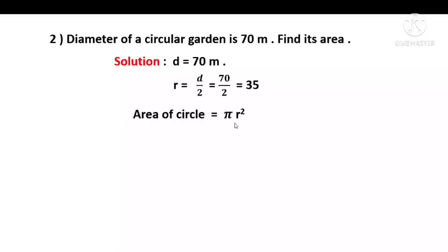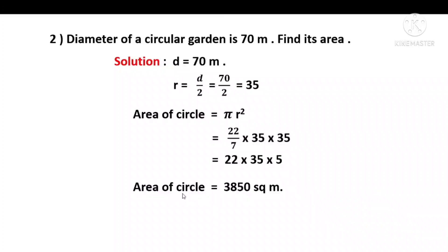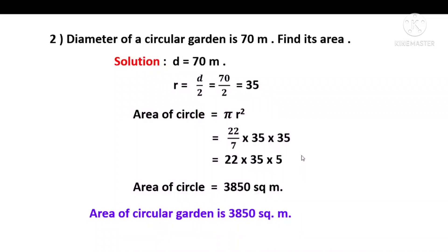Area of circle = π r². Pi value is 22/7, and r = 35. So, 22/7 × 35 × 35 = 3,850. Therefore, the area of the circular garden is 3,850 square meters.